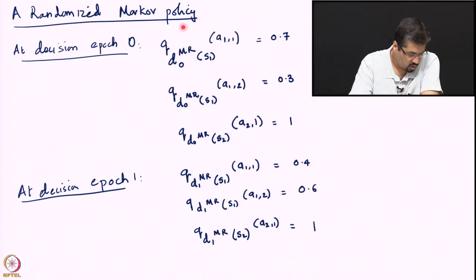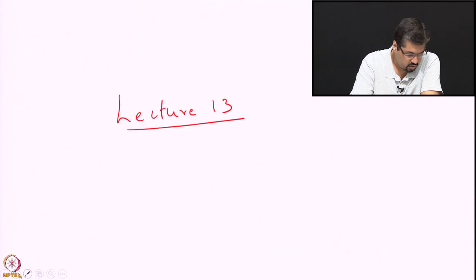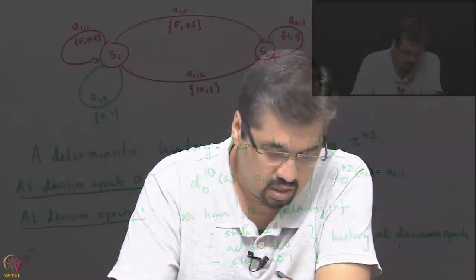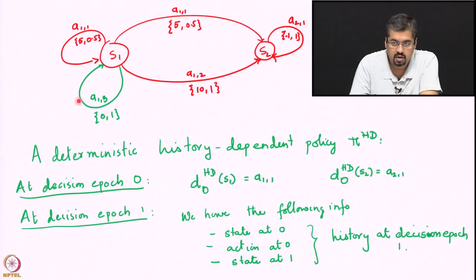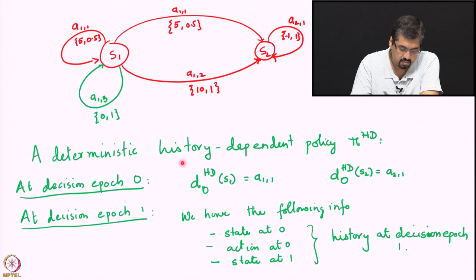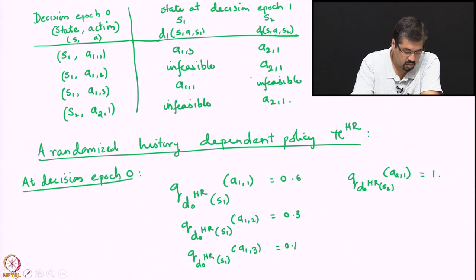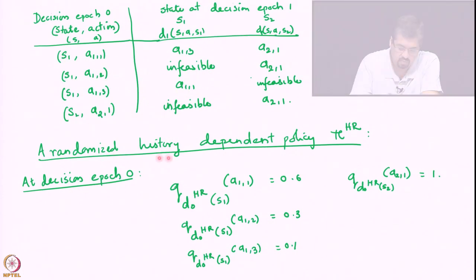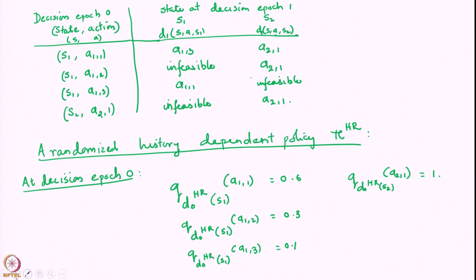The randomized Markov policy - we also altered the problem a little bit and then got to history dependent policies as well. For example, a deterministic history dependent policy and a randomized history dependent policy.